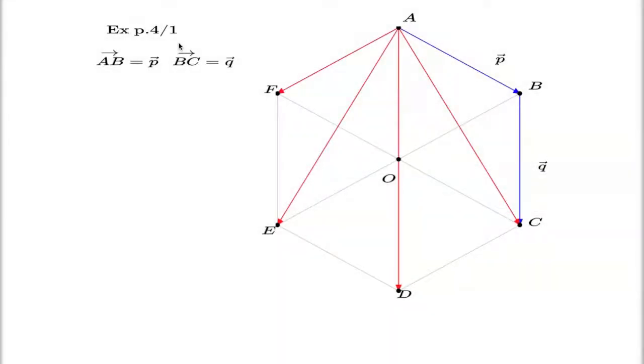Now the problem itself says this: we're given a hexagon, a perfect hexagon. We're given that two sides of this hexagon, like AB and BC, in vector form they're just given by little p and little q. The job is to express the diagonals and this other side of my hexagon as an expression through p and q.